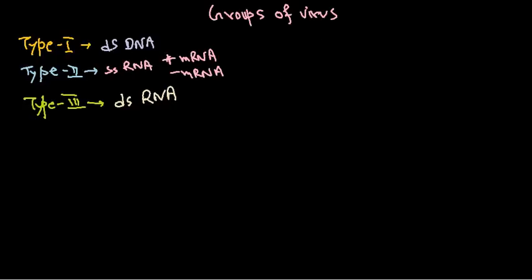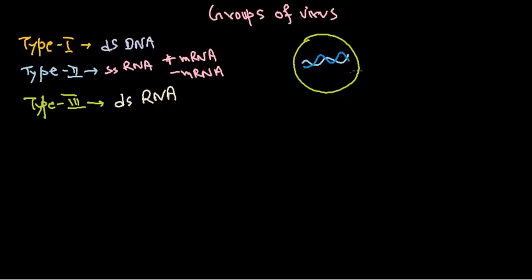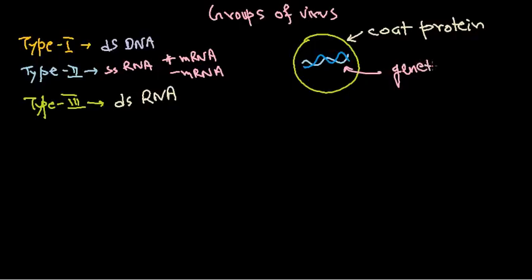Let me draw the virus here. The Type 3 virus has two different strands — a positive strand and a negative strand. It has a coat protein, also called a capsid, surrounding the genetic material inside. These two components — the capsid and the genetic material — are always present.